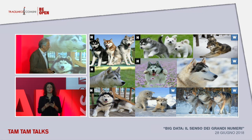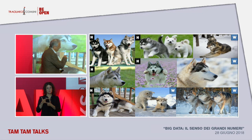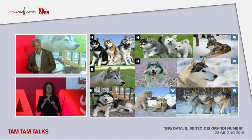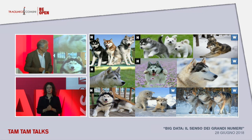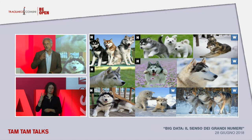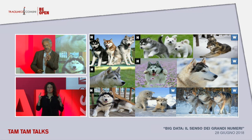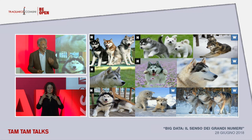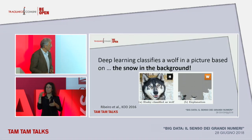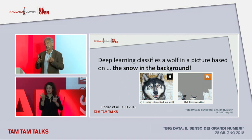For example, there was a study performed into this specific case by colleagues from Washington State University who developed an ad hoc technique for this purpose. They worked on that very hard, and then discovered in a deterministic manner that the method the machine uses to classify an animal as a dog or as a wolf is the presence of snow in the background.